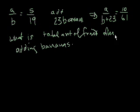So I actually give you a hint just when I wrote down the initial problem. We're saying that the ratio of a to b, so let's a equal the number of apples, and b is equal to the number of bananas. So the ratio of apples to bananas equals 5 to 19. When I add 23 bananas,